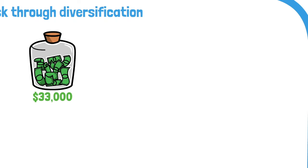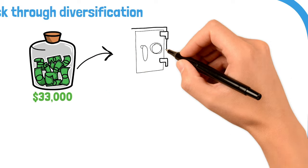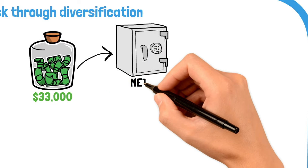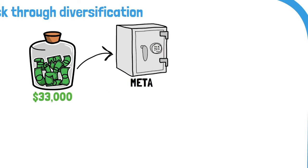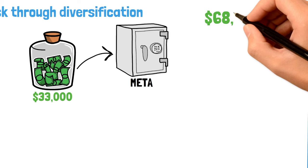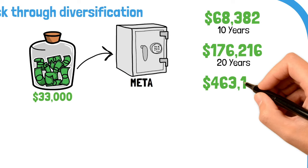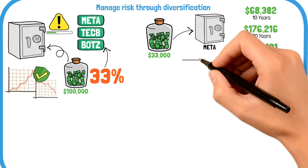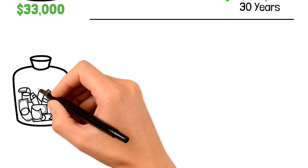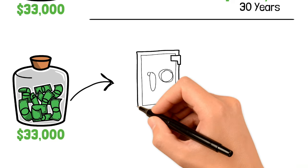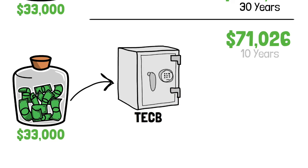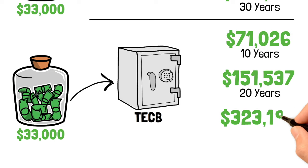Using the updated stock prices and growth projections, let's calculate the combined potential returns for this diversified portfolio. Starting with META, a $33,000 investment could grow to approximately $68,000 after 10 years, $177,000 after 20 years, and $463,000 after 30 years. For TECB, a $33,000 investment might reach about $71,000 in 10 years, $151,000 in 20 years, and $323,000 in 30 years.